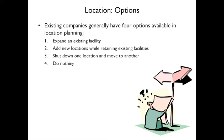For location options, existing companies have four options available. Number one: expand the existing facility — just add some space. Number two: open a new location while retaining the existing facility. Number three: shut down one location and move to another. And the fourth option is to do nothing — don't change.